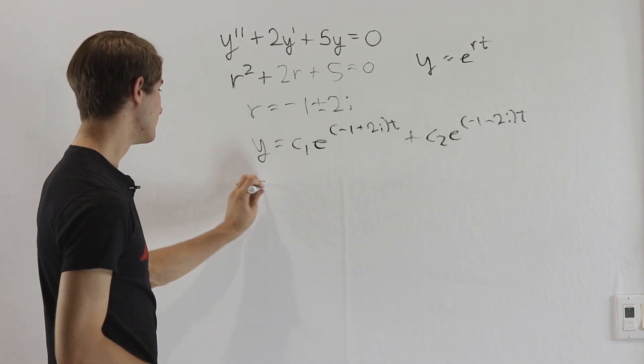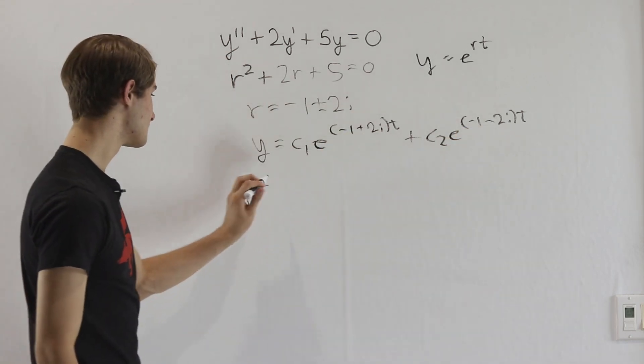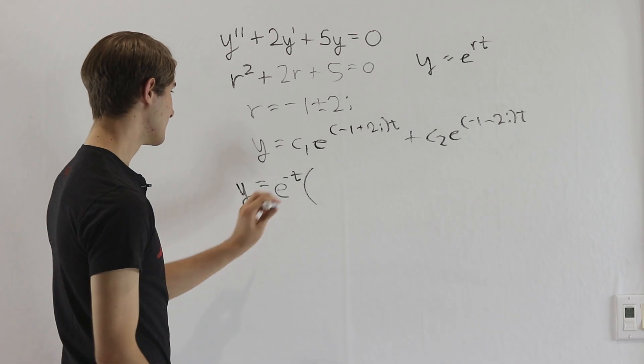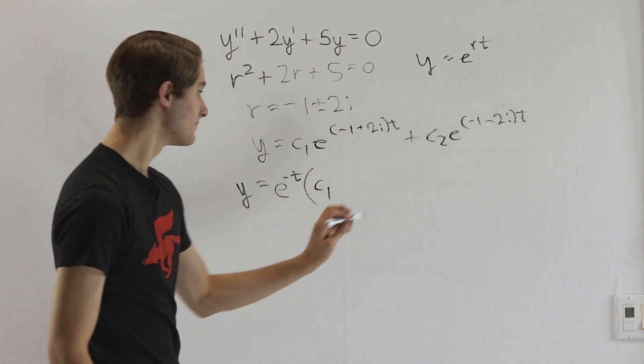So to start out, notice we have an e to the negative t in both of these terms right here. So let's factor that out, and then we're going to get c1 and we'll have e to the 2i t.